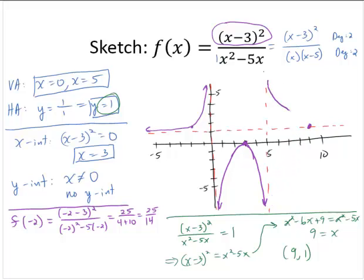It's got to come from the top, pass through that point, go below the horizontal asymptote, and then come back up to the horizontal asymptote. And so here's a rough sketch of the curve f of x equals x minus 3 squared over x squared minus 5x.